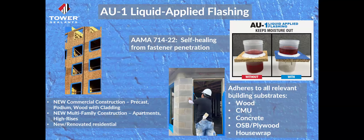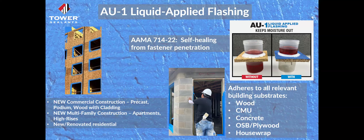The AMA 714-22 test includes a mechanical fastener test — nail and screw — where the liquid applied flashing must self-heal or wrap around the fastener without letting moisture through. This product is used in new commercial construction including tilt-walls, podium construction, wood with cladding, multi-family apartments, high-rises, and new or renovated residential homes. Compatible substrates include wood, CMU, concrete, OSB, and even house wrap.